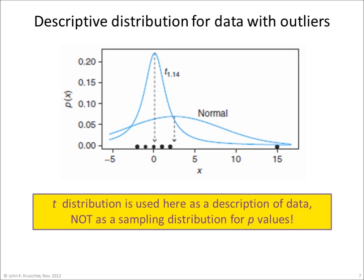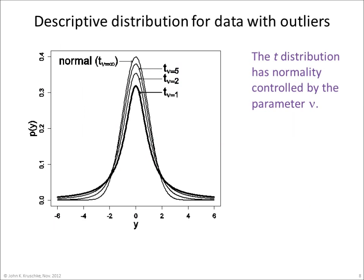Please understand that the t-distribution is used here as a description of data, not as a sampling distribution for p-values. The t-distribution has its normality controlled by the parameter nu. Nu ranges from 1 to infinity. When nu is 1, the t-distribution has heavy tails as shown by the dark curve in this figure. As nu approaches infinity, the t-distribution becomes normal.